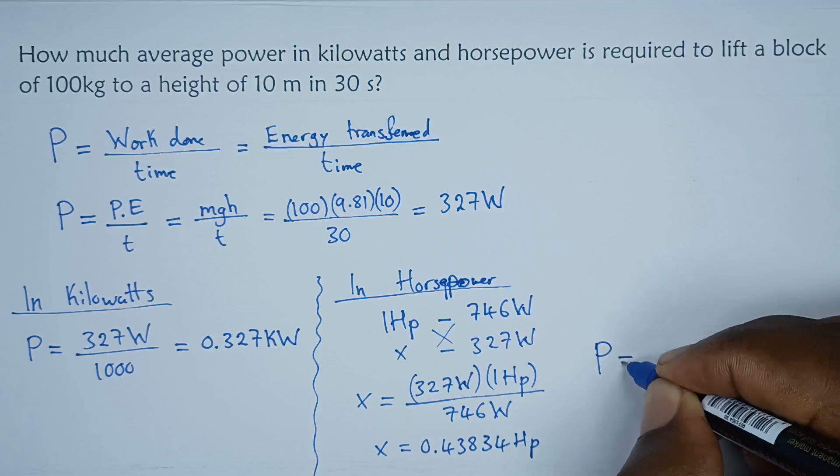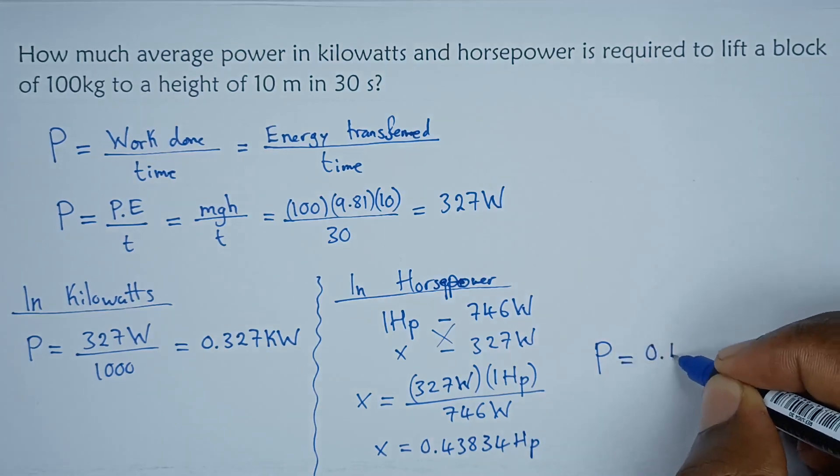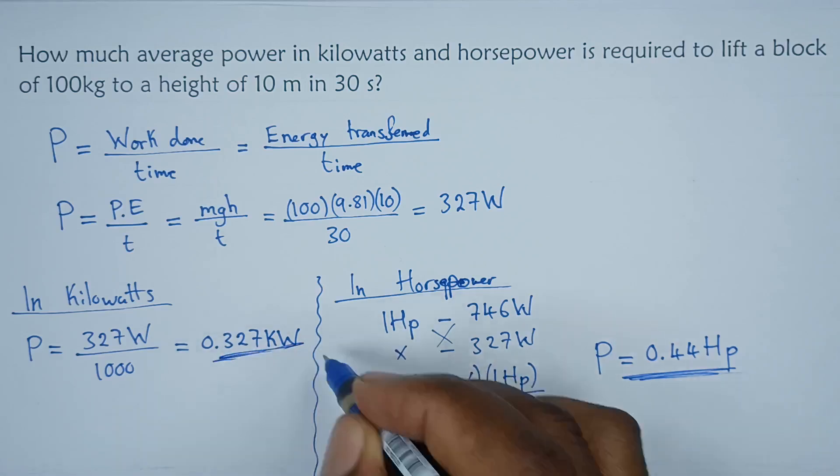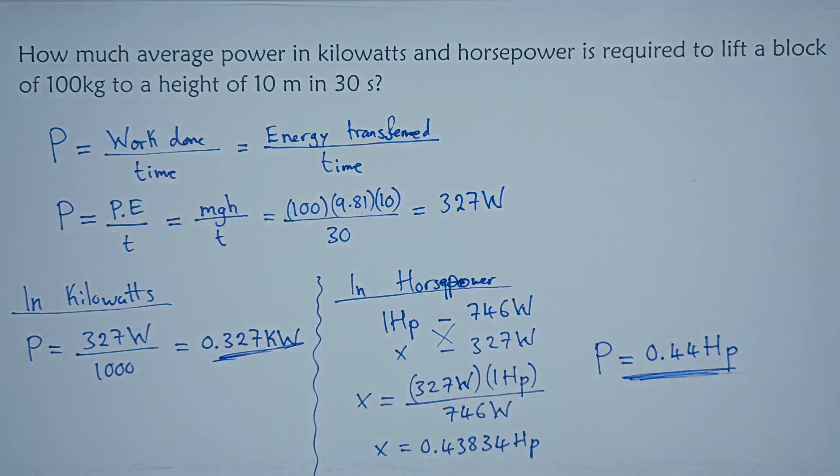So in this case our power is simply 0.44 horsepower. Okay, so this is the power in horsepower and this is the power in kilowatts. I hope it makes sense, thank you very much.